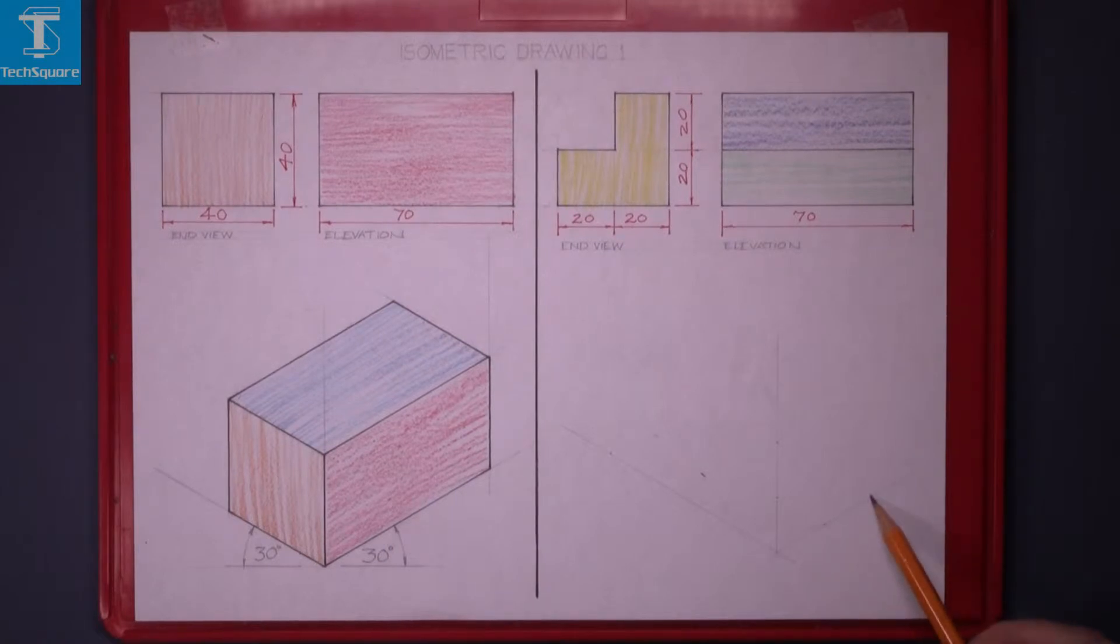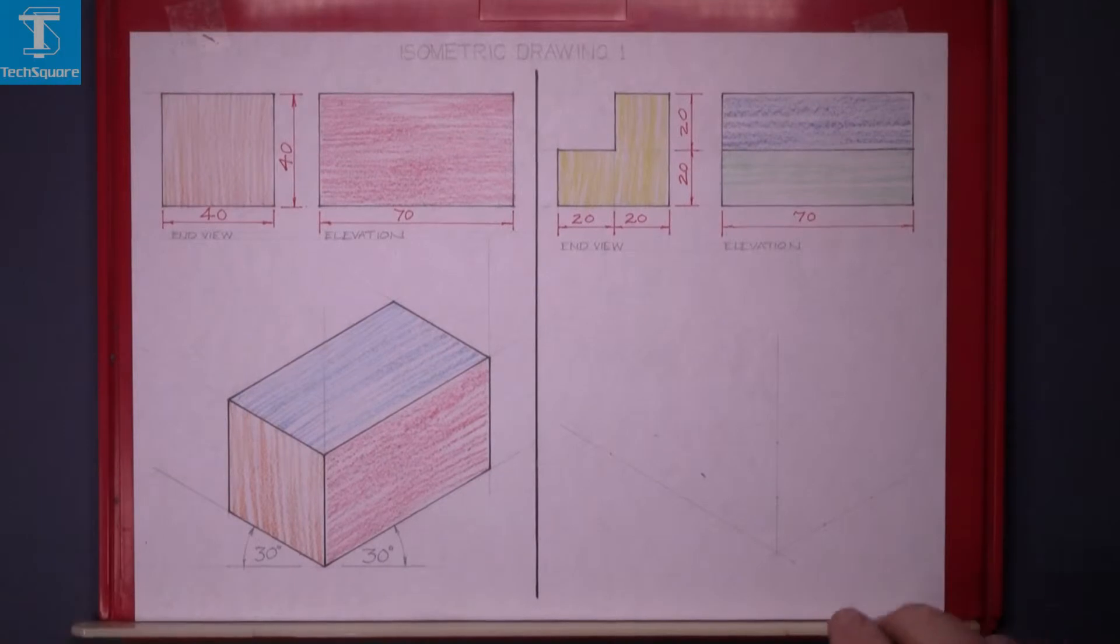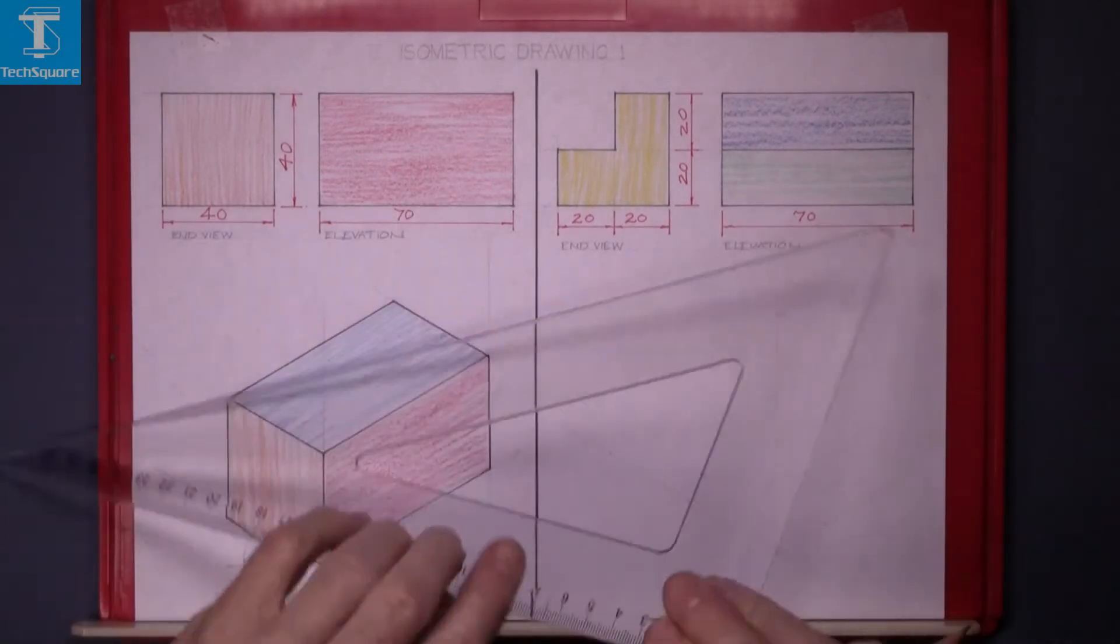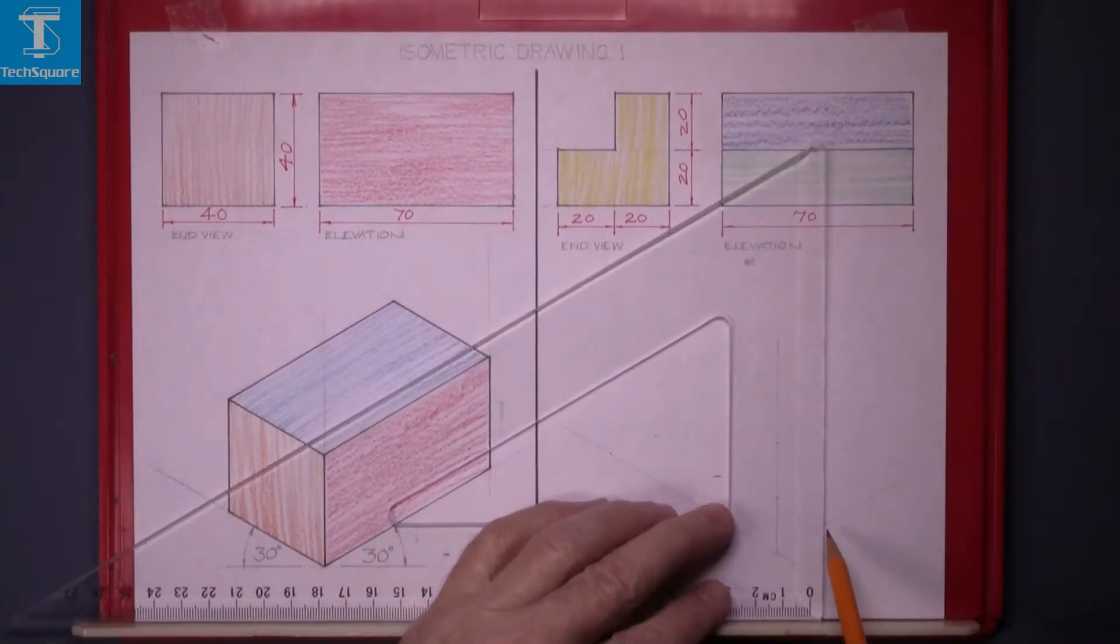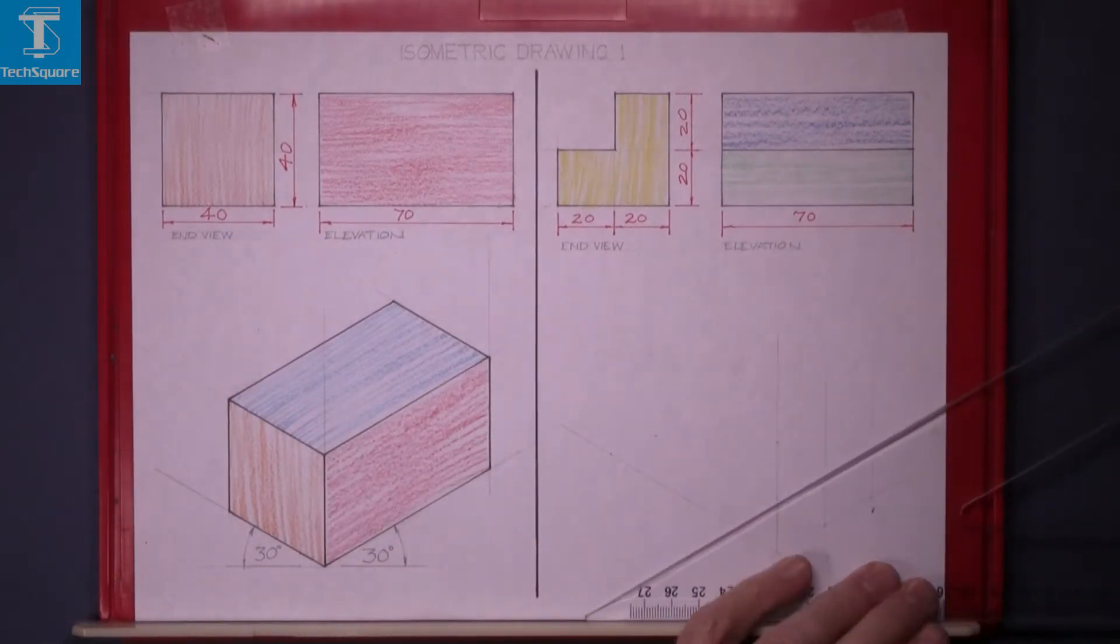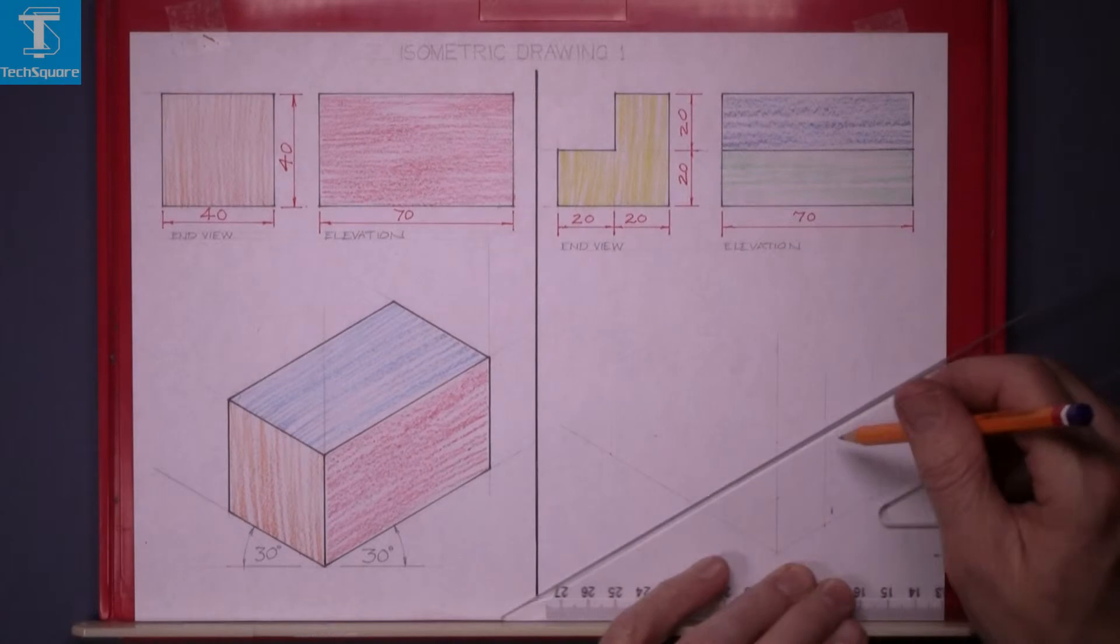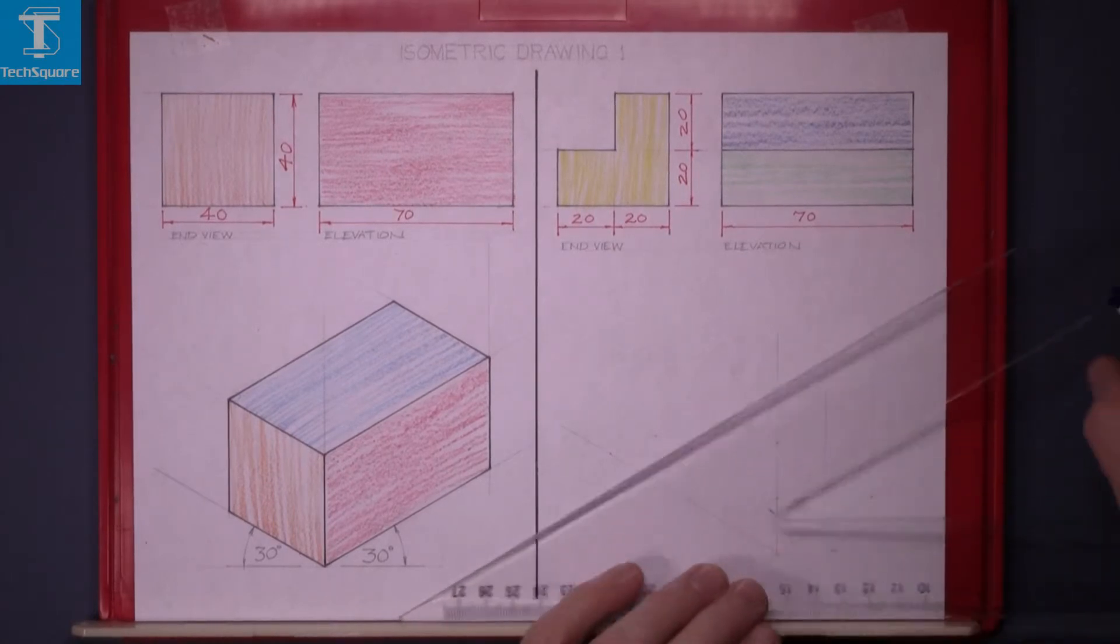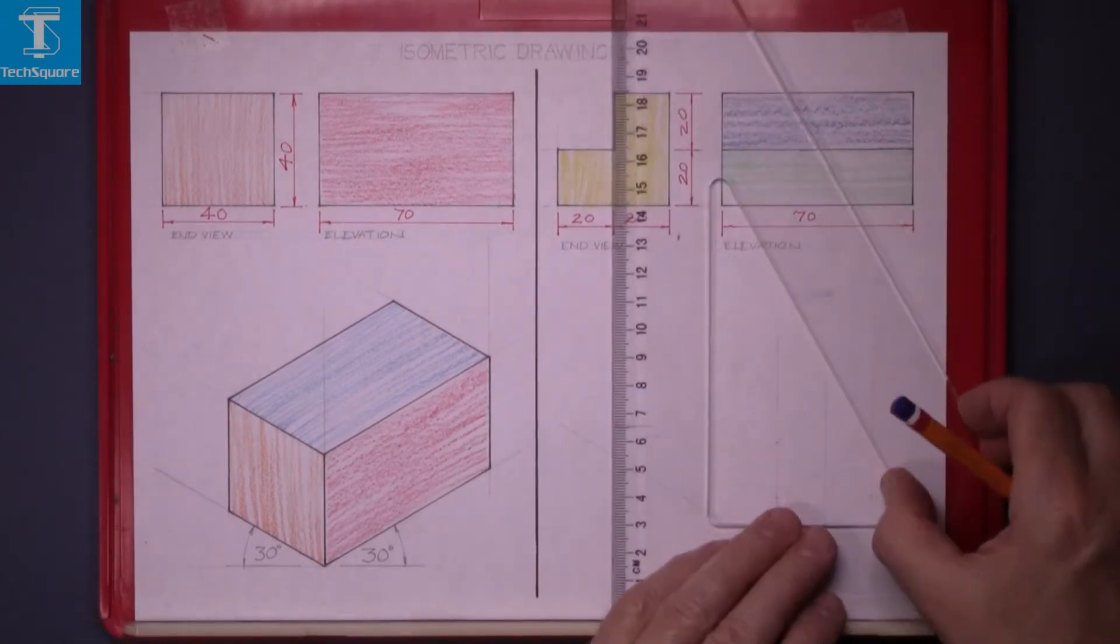So measure back 20 and 20 and draw the end of the piece. So I have the points marked off here. And the height is 20 and 20 as well there. That is the end of the piece there now.